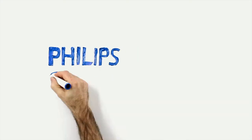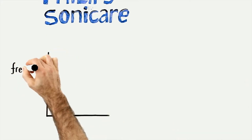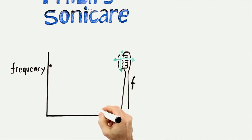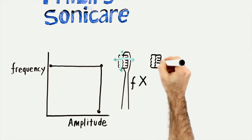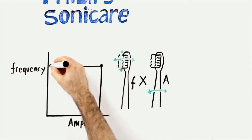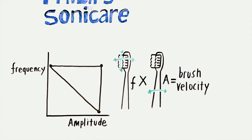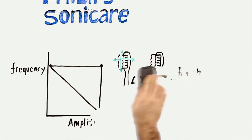The movement of all power toothbrushes can be characterized by two variables. On one axis, you have the frequency, which is measured by the number of brushstrokes. That number is then multiplied by the amplitude, or distance of bristle movements, which equals bristle velocity. Some power toothbrushes either have high frequency or high amplitude, but not both.